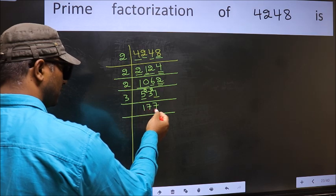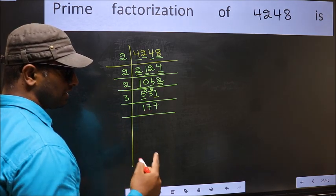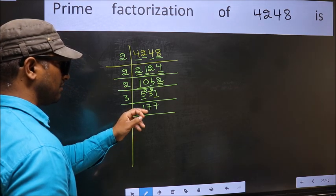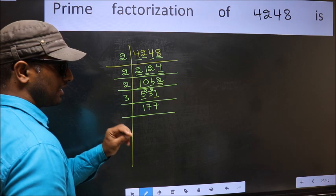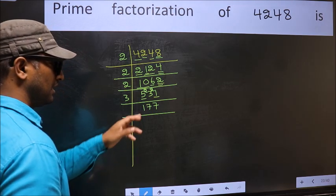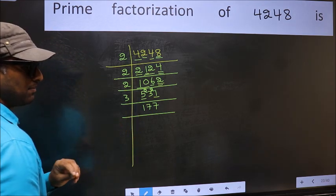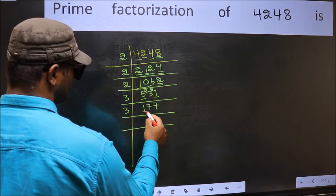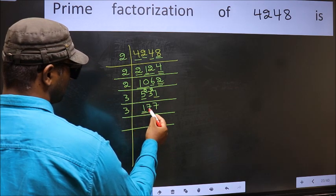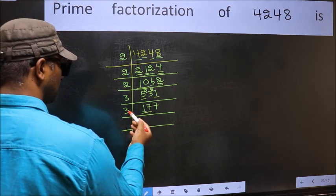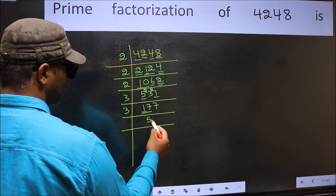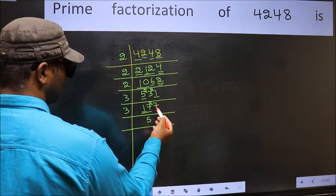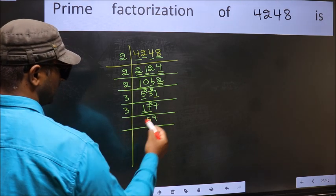Now, to check whether 177 is divisible by 3 or not — add the digits: 1 plus 7 plus 7 equals 15, and 15 is divisible by 3. So this number is also divisible by 3. So take 3 here. First number 1 is smaller than 3, so take 2 numbers: 17. A number close to 17 in the 3 table is 3, 5's 15. 17 minus 15 is 2; 2 carried forward: 27. When do we get 27 in the 3 table? 3, 9's 27.